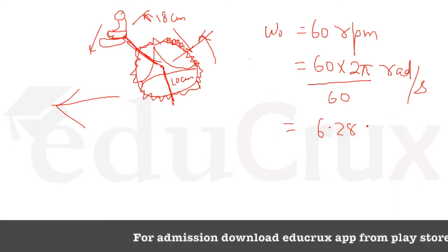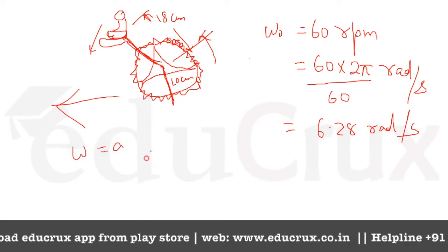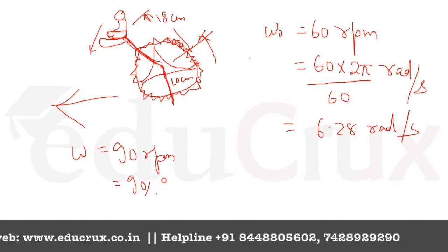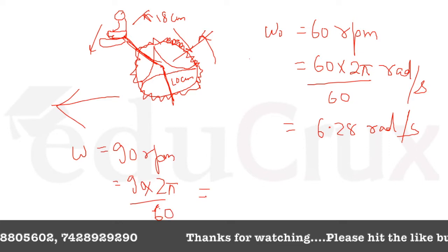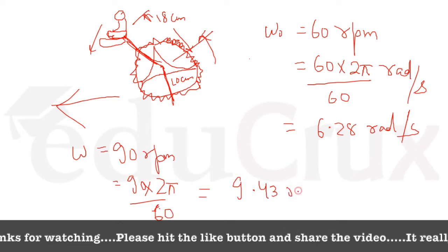So omega is 90 rotations per second. So again we will do this, 90 into 2 pi divided by 60 and when we will solve this, this will come out as 9.43 radians per second.